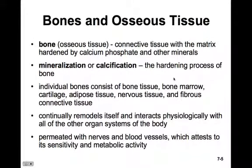Bone, or osseous tissue, is a connective tissue with a matrix hardened with calcium, phosphate, and other minerals — a calcified matrix rather than a gelatinous one. The process of hardening is called mineralization or calcification. Individual bones consist of bone tissue, bone marrow, cartilage, adipose tissue, nervous tissue, and fibrous connective tissue. Bones are continually remodeling themselves, changing all the time, and interact physiologically with all the other organ systems of the body.